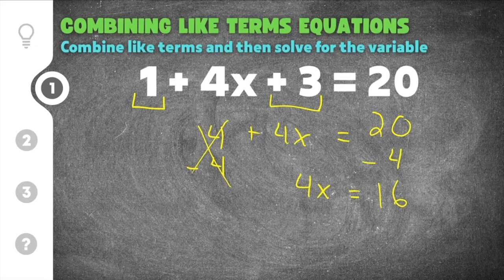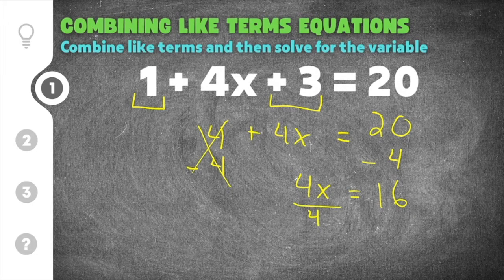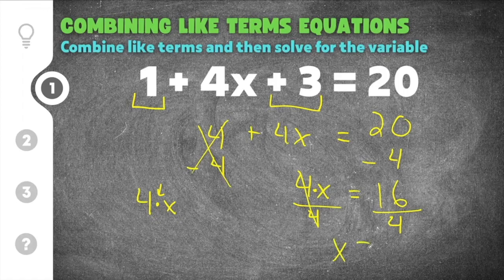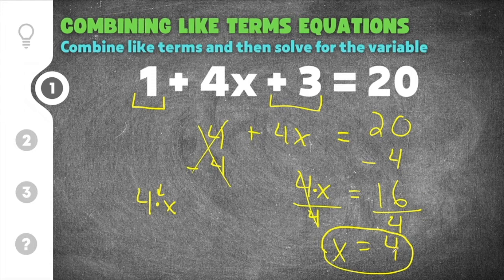The final step is to get x by itself by dividing by the coefficient. In this problem the coefficient is 4. Anytime you have a number in front of a variable you are really multiplying, so this is like saying 4 times x. The opposite of multiplying by 4 is to divide by 4, so the 4s cancel. We also divide by 4 on the right: 16 divided by 4 is 4. So our final solution is x equals 4.